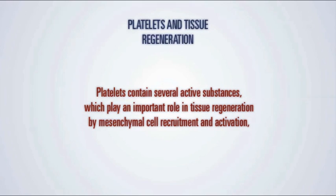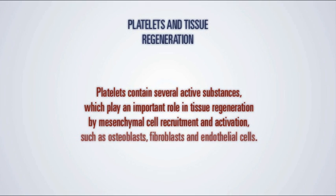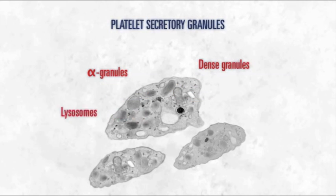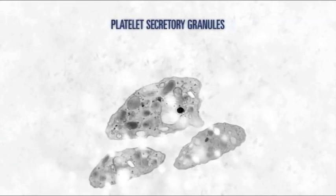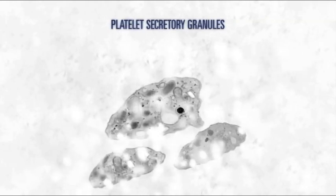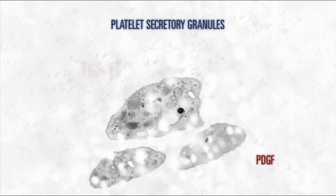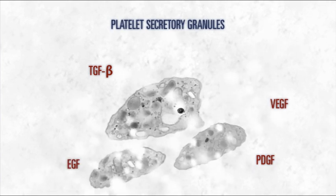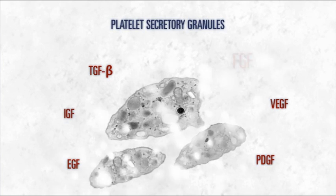Platelets act through mesenchymal cell recruitment and activation — such as osteoblasts, fibroblasts, and endothelial cells. Active substances are located in different subcellular structures: alpha granules, dense granules, lysosomes, and micro-peroxisomes. Alpha granules contain mitogenic and chemotactic growth factors important in wound healing, such as PDGF, TGF-beta, VEGF, EGF, IGF, and FGF.